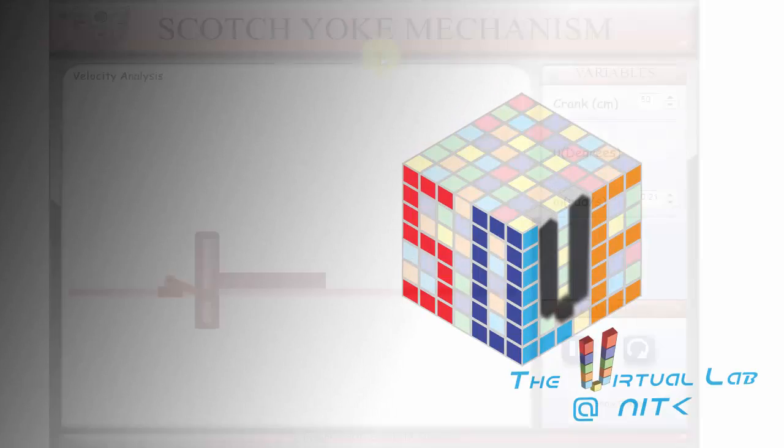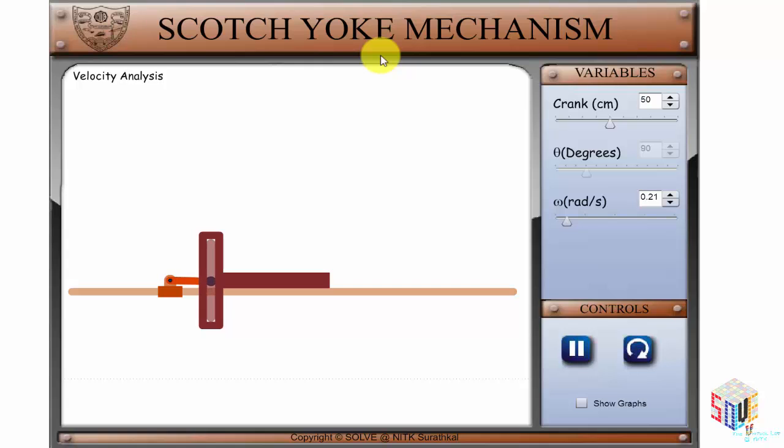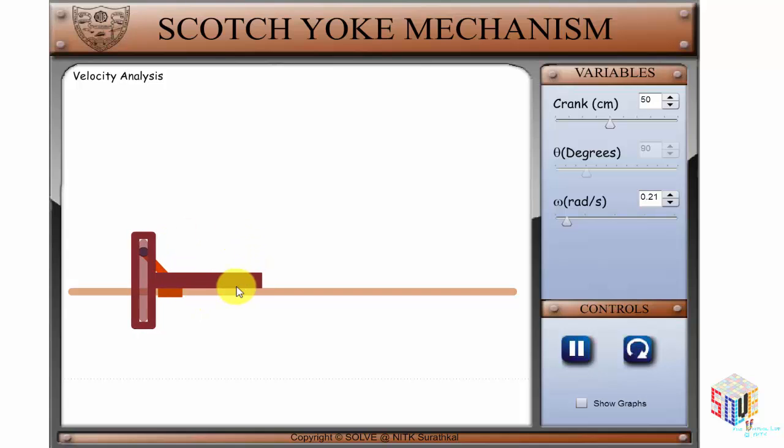Welcome to Solve, the Virtual Lab at NITK. In this short tutorial, I will explain how to use this interface to do the velocity analysis of scotch yoke mechanism to determine the velocity of the oscillating slider, given the position and orientation of the crank and link lengths.